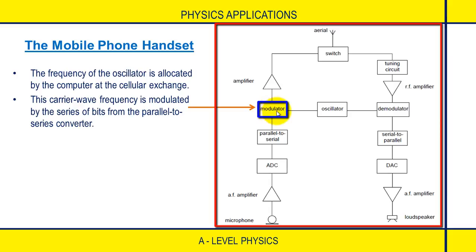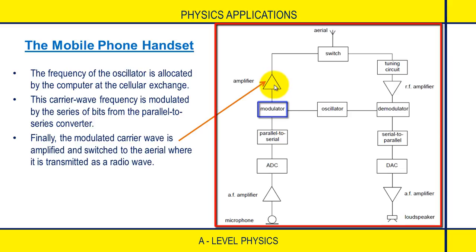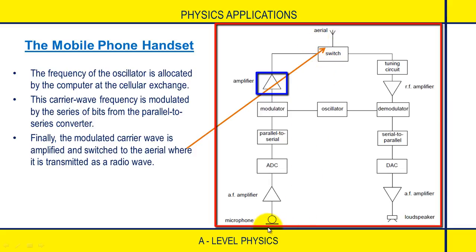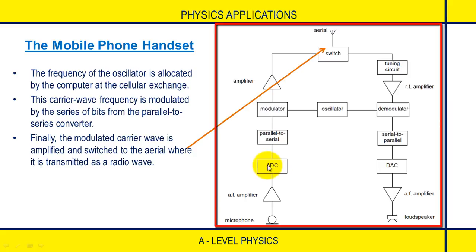At the next point, the modulated carrier wave is amplified by an amplifier so that it can be transmitted as a radio wave. In summary, the sound wave is converted into an analog voltage, amplified by an audio frequency amplifier, converted to a digital signal, modulated, amplified, and then transmitted.